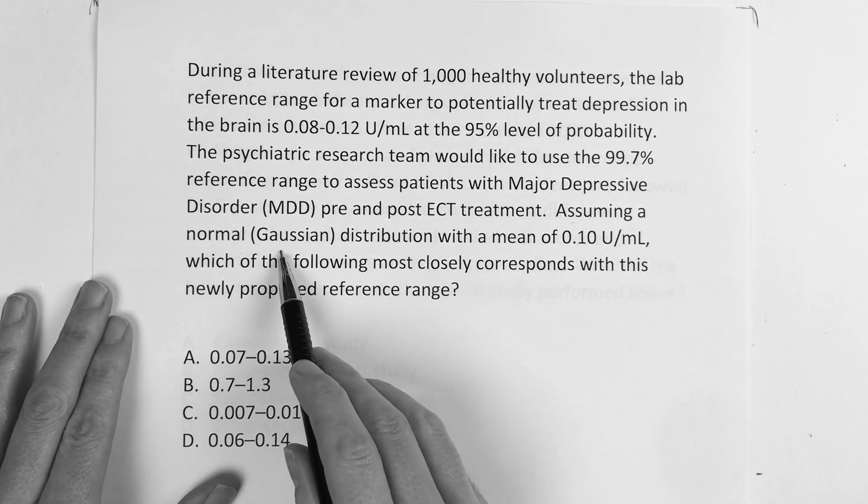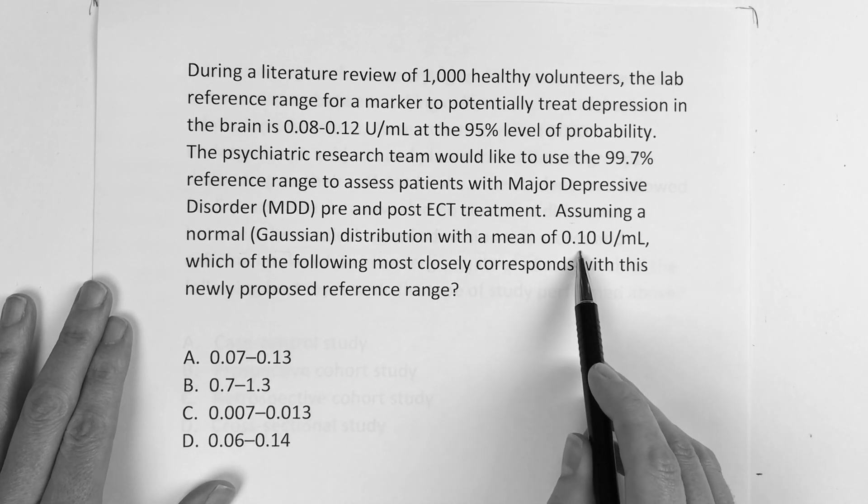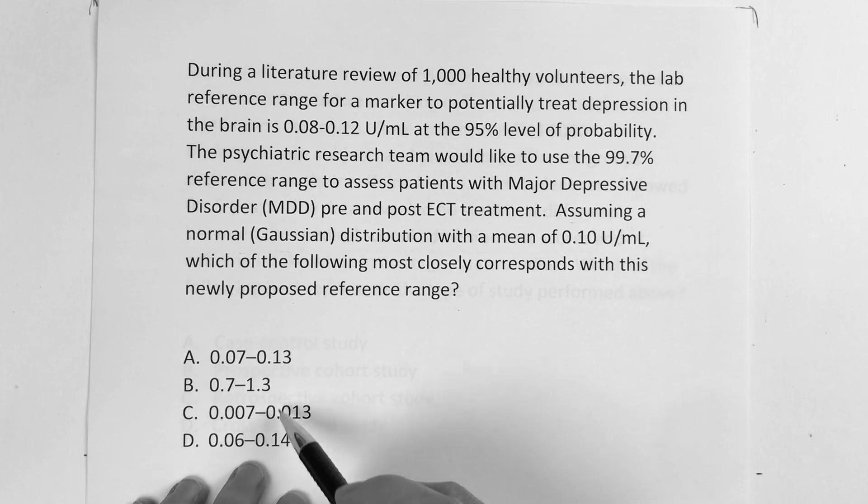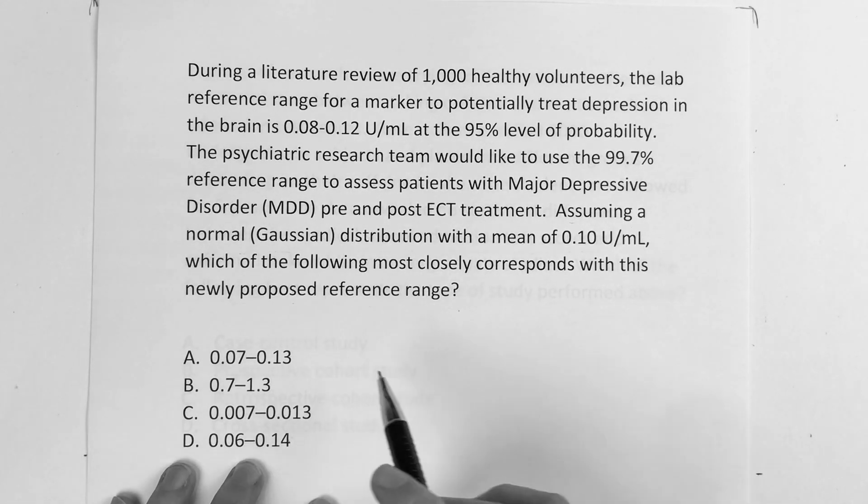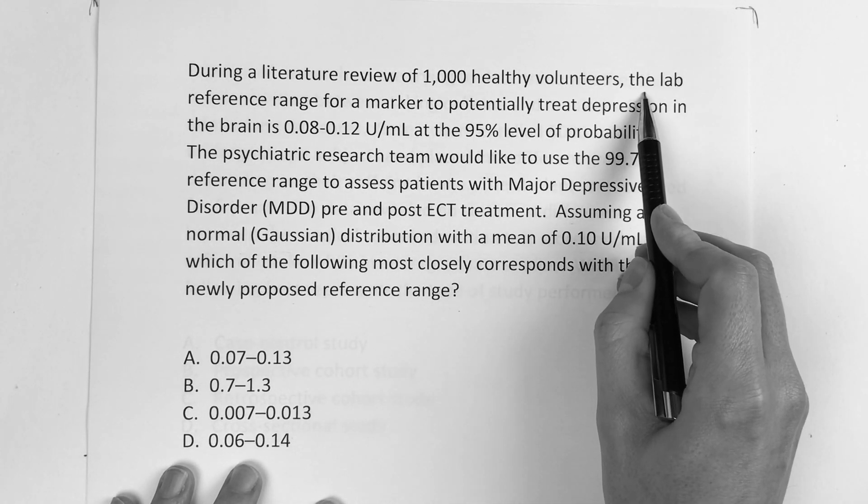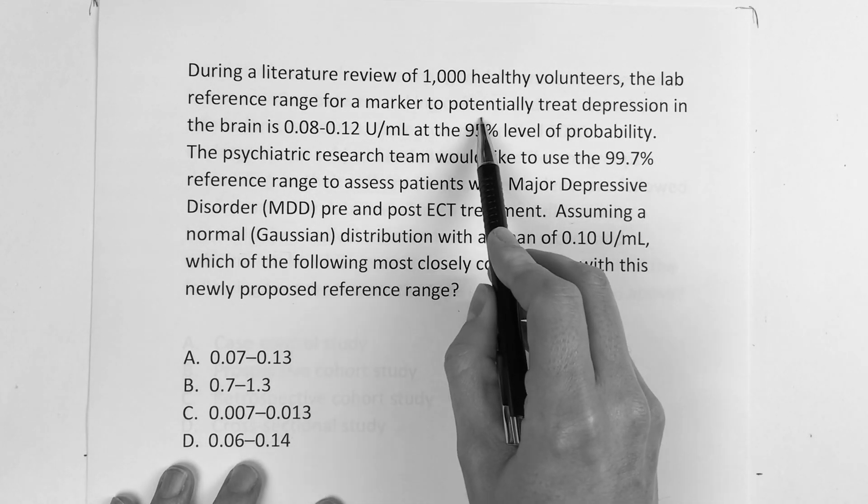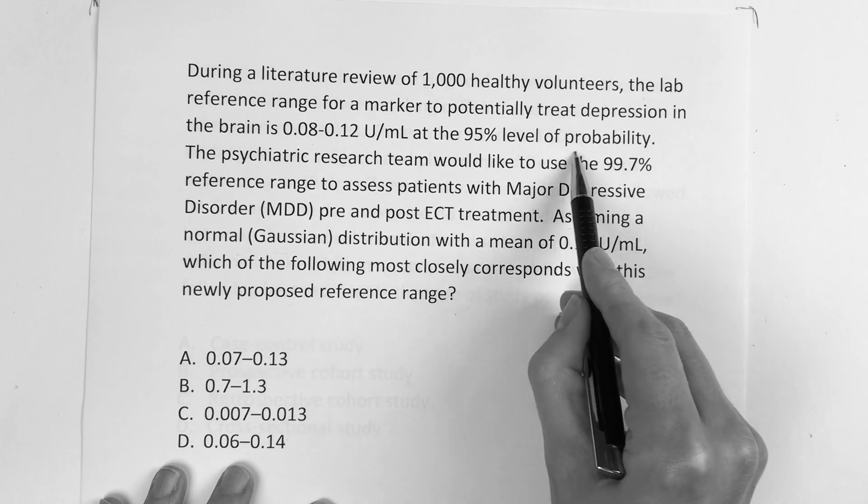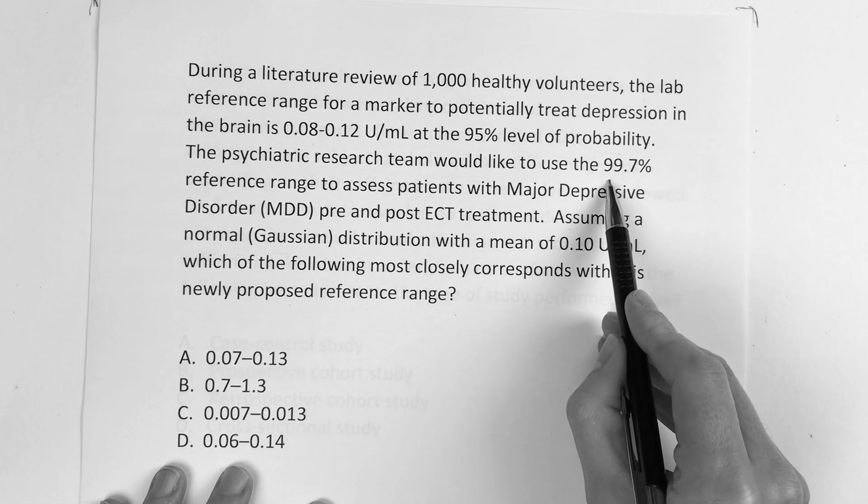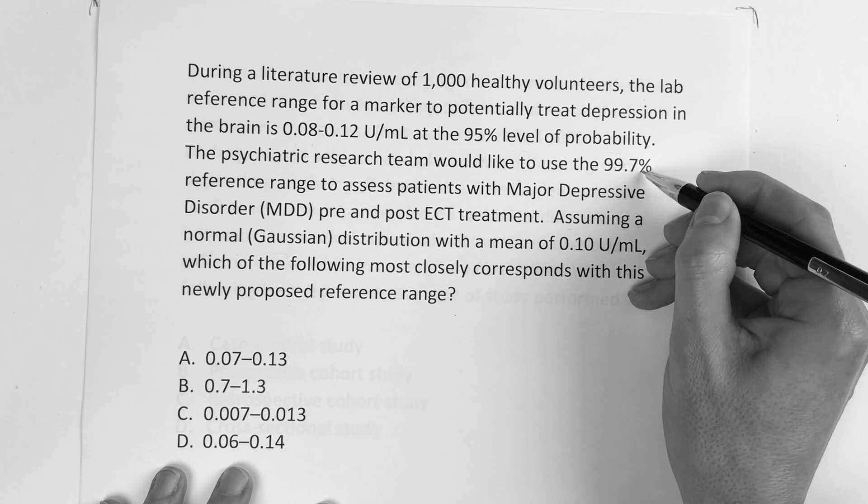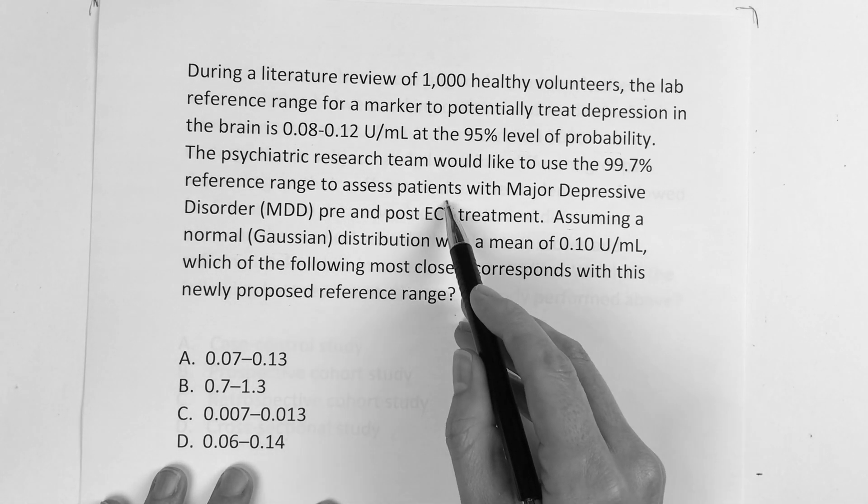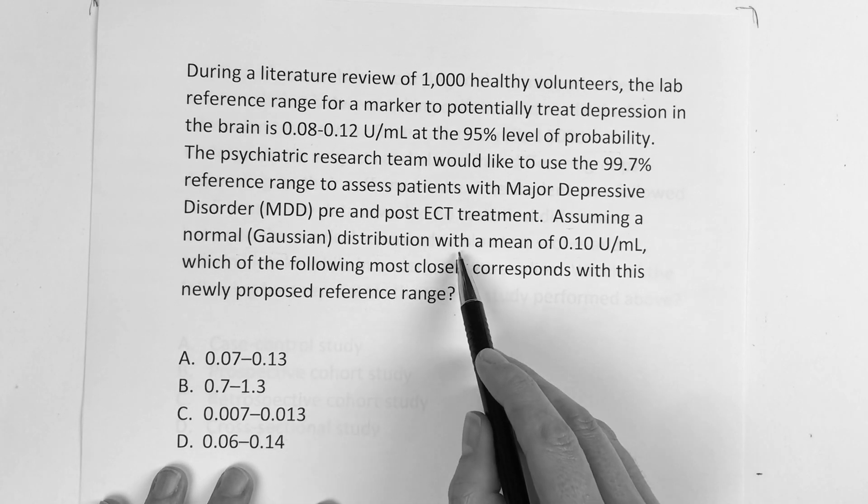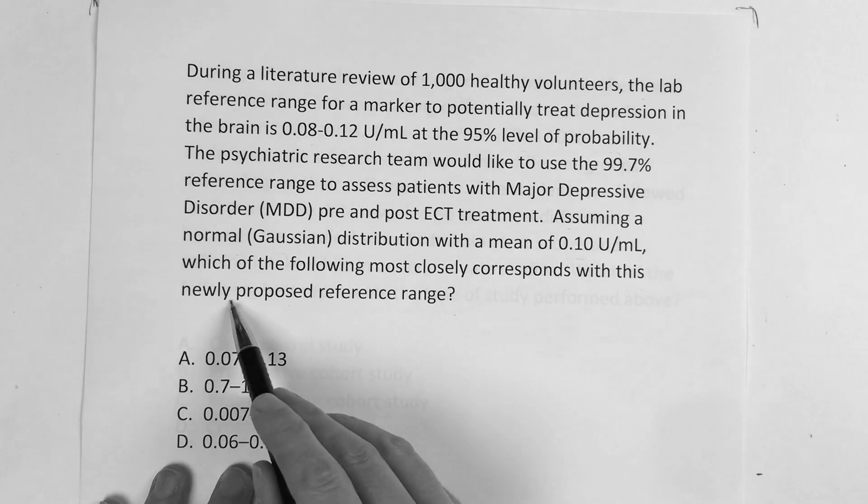All right, it says assuming a normal Gaussian distribution with a mean of 0.10, which of the following most closely corresponds with this newly proposed reference range? During a literature review of 1,000 healthy volunteers, the lab reference range for a marker to potentially treat depression in the brain is 0.08 through 0.12 at the 95% level of probability. The psychiatric research team would like to use the 99.7% reference range to assess patients with major depressive disorder pre and post-ECT treatment. Assuming a normal Gaussian distribution with a mean of 0.10, which of the following most closely corresponds with the newly proposed reference range?